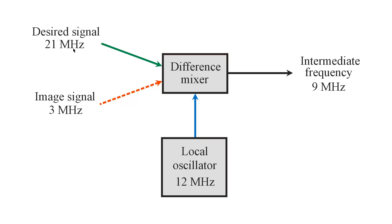Your desired signal is 21 megahertz — you might recognize that as a 15-meter ham radio signal. If that signal comes in and the local oscillator is tuned to 12 megahertz, then the difference frequency, 21 megahertz minus 12 megahertz, will equal 9 megahertz. Now if you wanted to change to 21.5 megahertz, you would tune your receiver by tuning the local oscillator to 12.5 megahertz, so the difference would still be 9 megahertz.